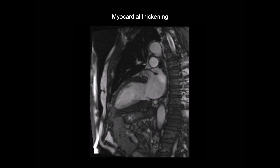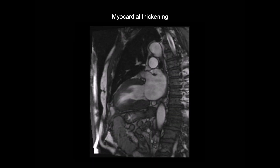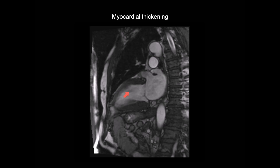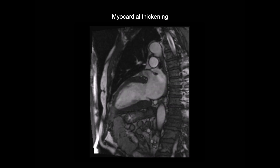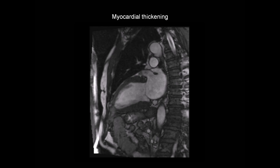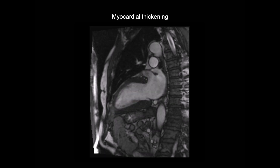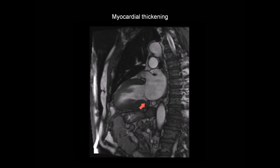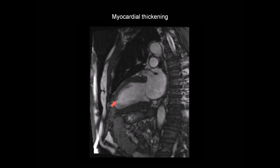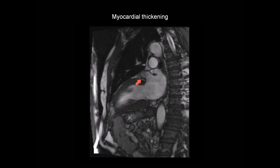This is a cine CMR image showing a two-chamber view of the heart — the left ventricle, mitral valve, and left atrium. This is from a 74-year-old man with cardiac amyloidosis, and we can see thickening of the myocardium, which is concentric throughout the whole of the left ventricle.